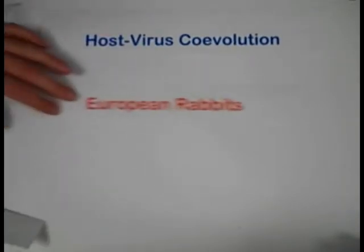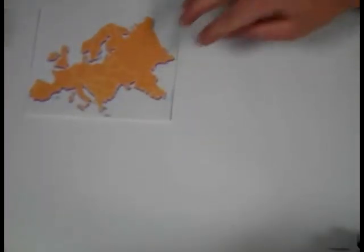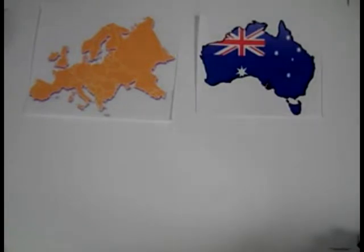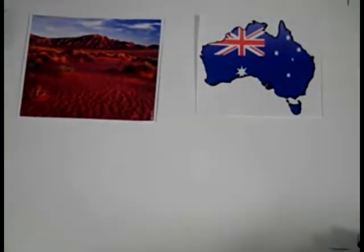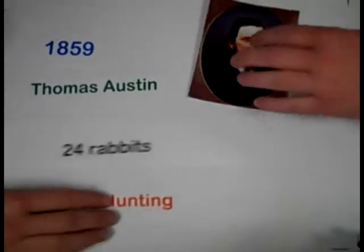One of the greatest examples of host-virus co-evolution is the story of European rabbits invading Australia in the 1860s. During this time, Europe was attempting to westernize Australia by introducing non-native species that existed at manageable populations in Europe, but their survival success was unknown in the drier, desert-like climate of Australia. In 1859, Thomas Austin brought over 24 rabbits from Europe to Australia, strictly for recreational activities such as hunting.